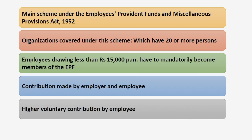EPF is the main scheme under the Employees Provident Funds and Miscellaneous Provisions Act 1952. It covers every establishment in which 20 or more persons are employed. Certain organizations are covered subject to conditions and exemptions even if they employ less than 20 persons. Only organizations with more than 20 employees must mandatorily come under EPFO.